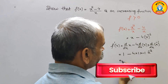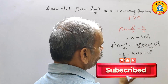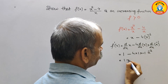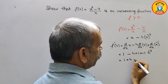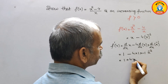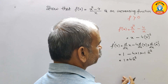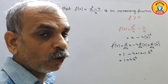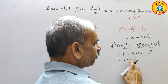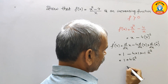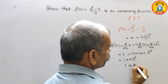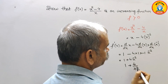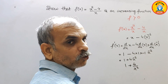So f'(x) = 1 + 4x⁻², which we can write as 1 + 4/x². This is our derivative expression.